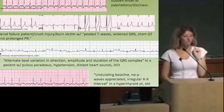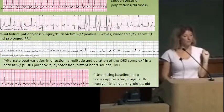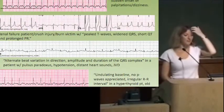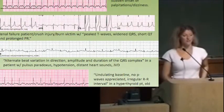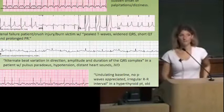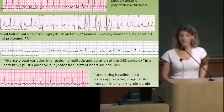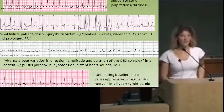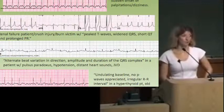The clinical picture helps: you also notice pulsus paradoxus, hypotension, and distant heart sounds and JVD. That's tamponade. This EKG finding is called electrical alternans. It makes sense with tamponade — blood is filling up the pericardial sac, dampening the voltage, which is why it's such a low-voltage EKG tracing.